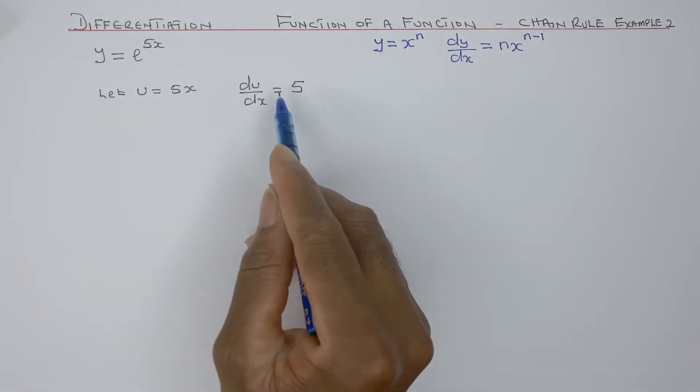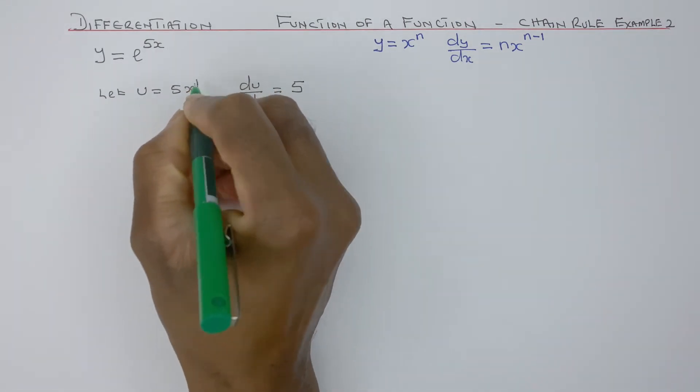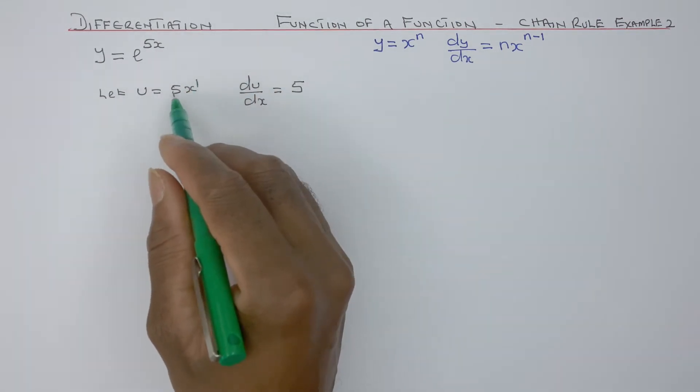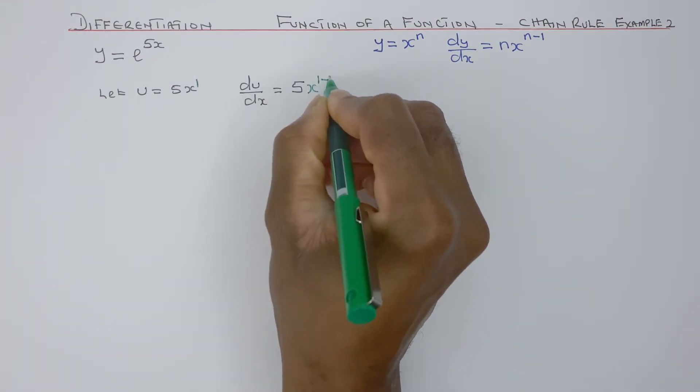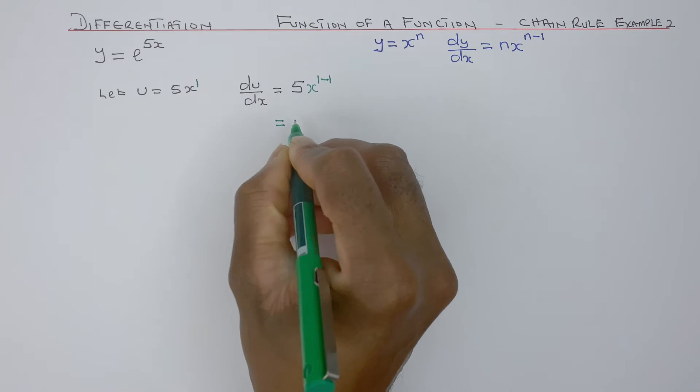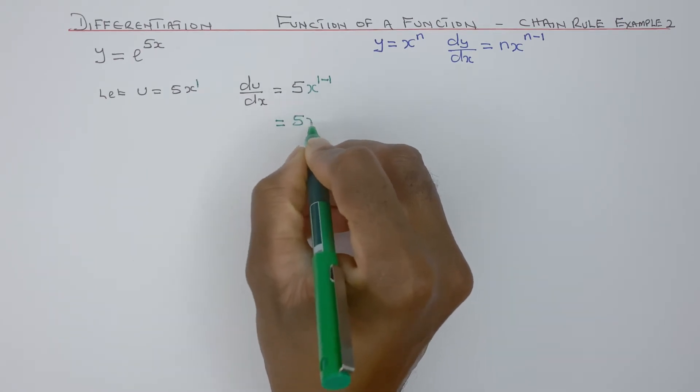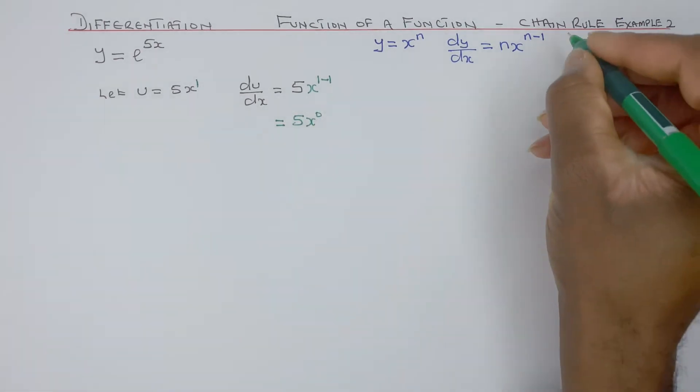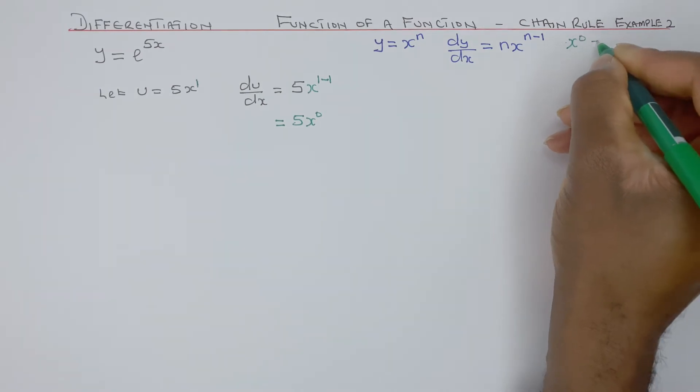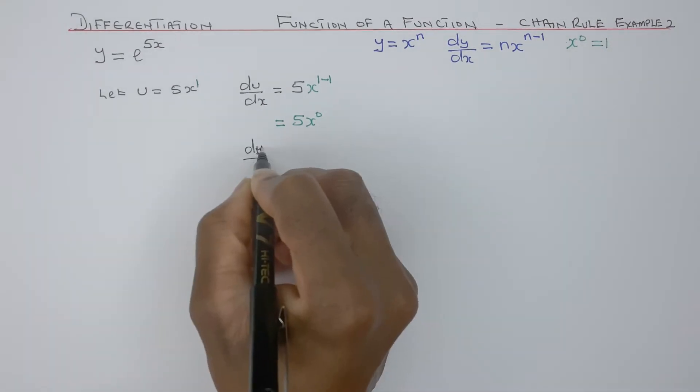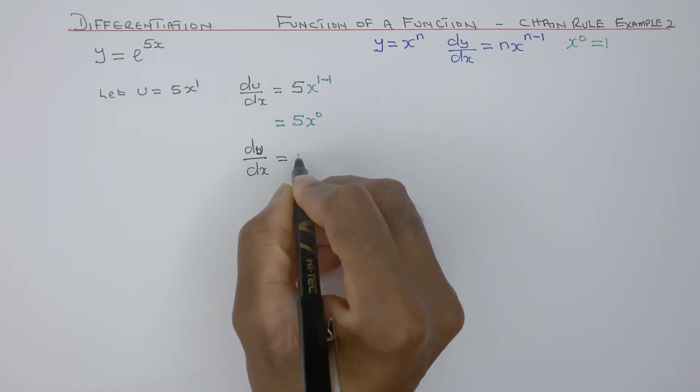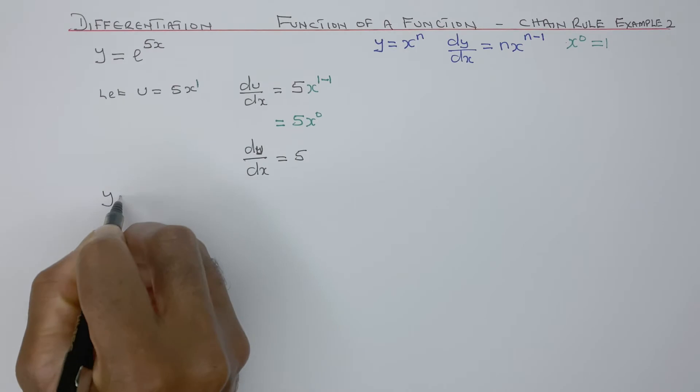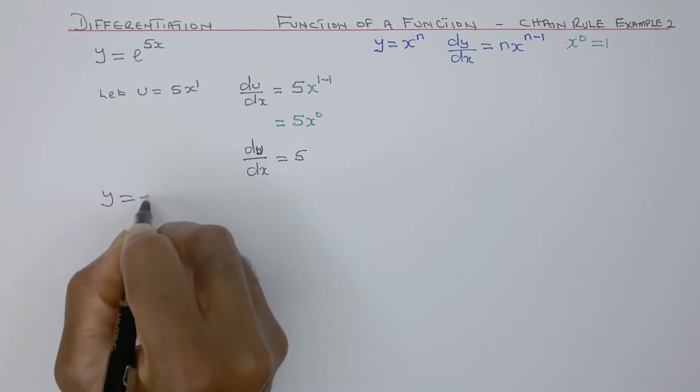In this case, 5x is to the power of 1, so there will be 1 times 5, and that's 5. Then you get x to the power of 1 minus 1, which equals 5x to the power of 0. x to the power of 0 equals 1, so du/dx equals 5 times 1, which is 5.